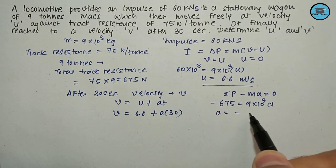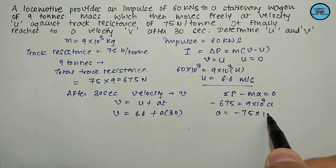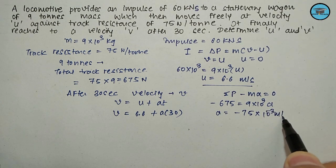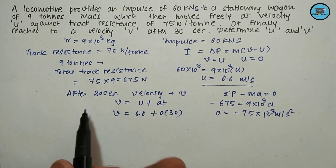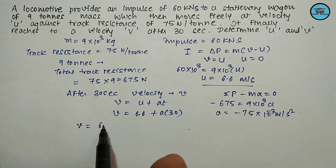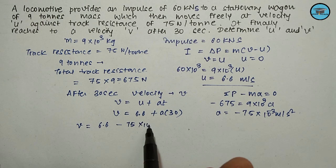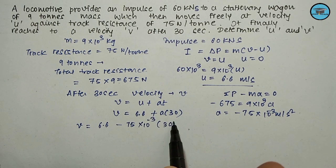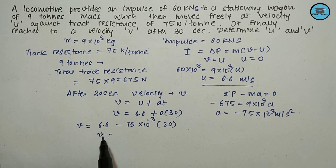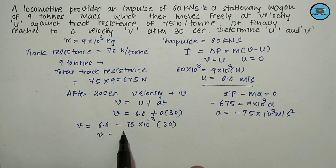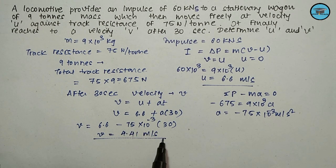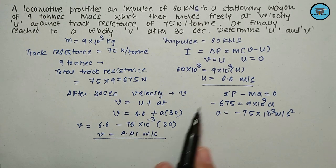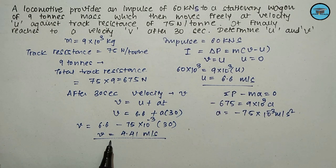Placing the value of a in the equation, we get V = 6.6 - 75 × 10⁻³ × 30, so V equals 4.41 meters per second. We have obtained U as 6.6 meters per second and V as 4.41 meters per second.